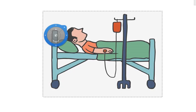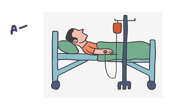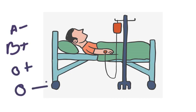Let's imagine a situation. You are a renowned doctor. A patient needs A negative blood, but you have B positive, O positive, and O negative blood in stock. You don't have enough time to find a donor for A negative blood. Now what do you need to do?